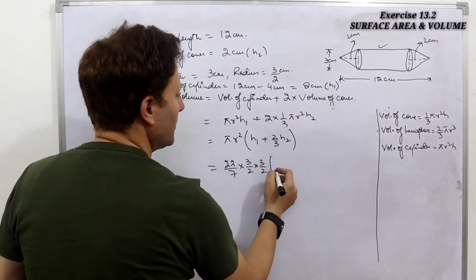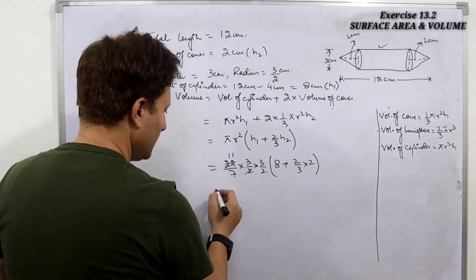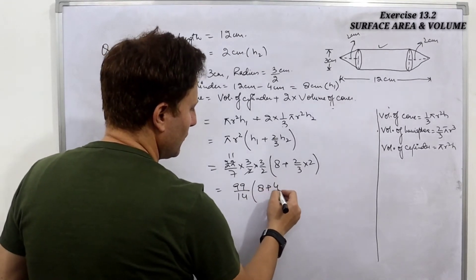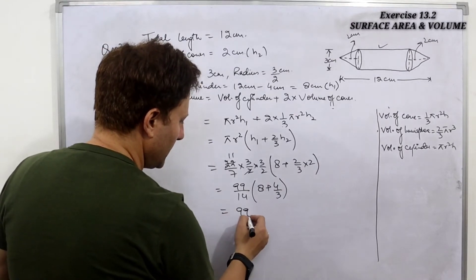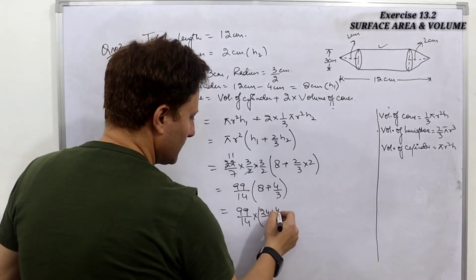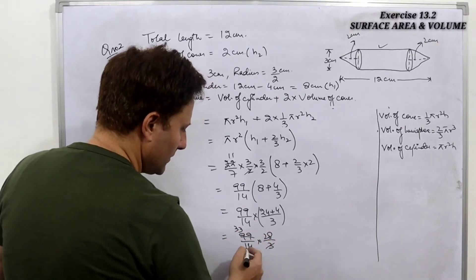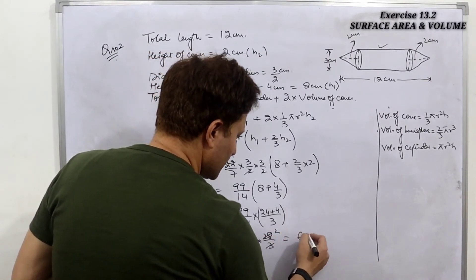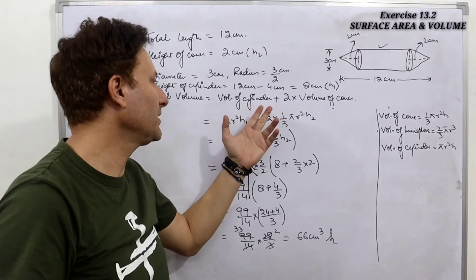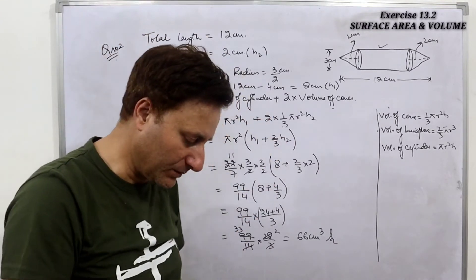Substituting values: (22/7) × (3/2)² × (8 + (2/3)×2) = (22/7) × (9/4) × (8 + 4/3). Taking LCM for 8 + 4/3 gives 28/3. Simplifying: (11 × 9)/(14) × (28/3) = 99/14 × 28/3 = 66 cubic centimeters. So the total volume of the model is 66 cm³.